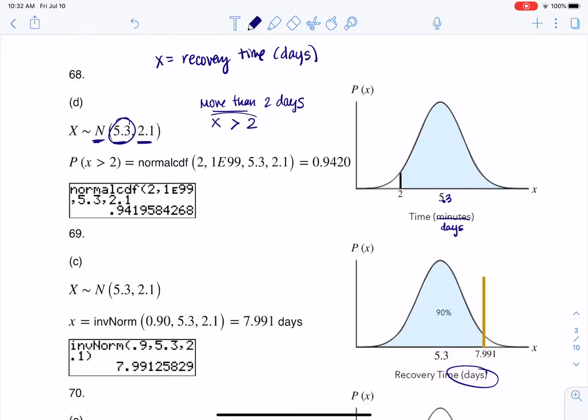More than turns into a greater than symbol, and 2 is the number 2. We're talking about recovery time, so that's what should go inside the parentheses of my probability statement. If you hear me talk about probability statement, I always want to see them in your written work, and it means that you have capital P with something in parentheses.